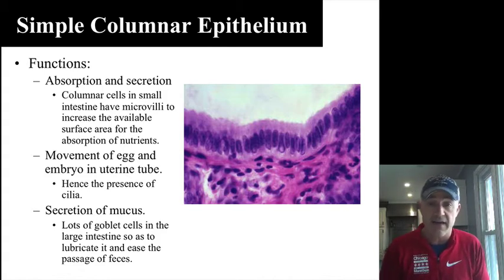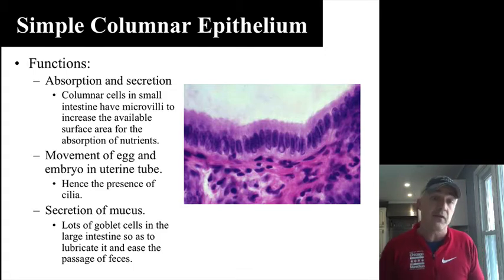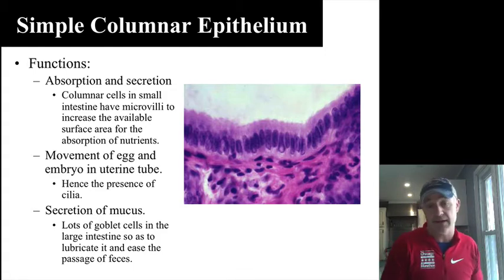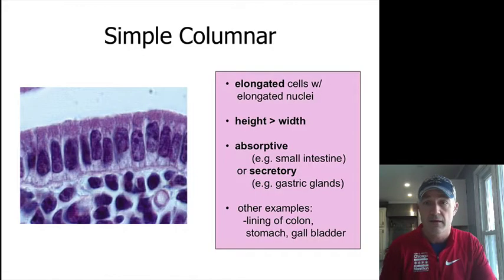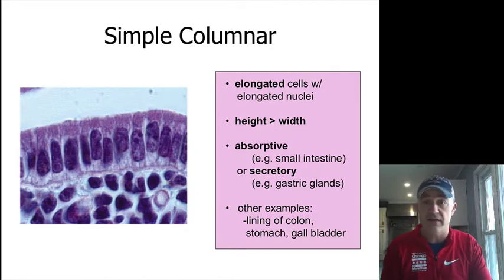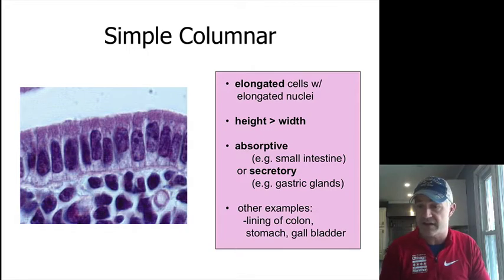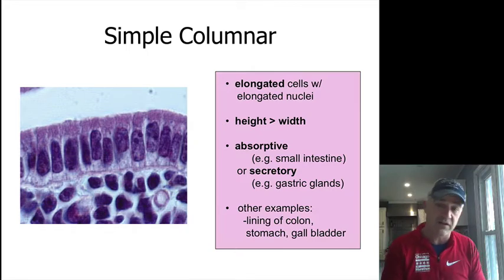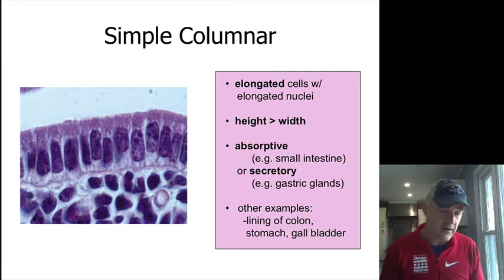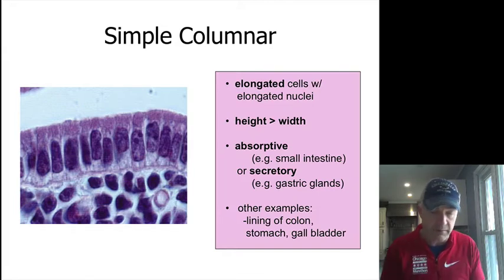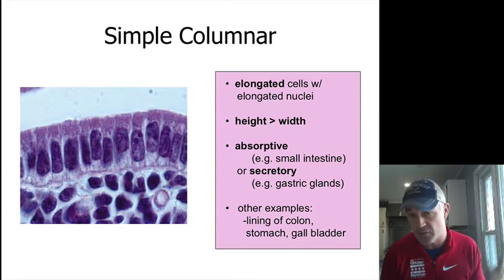The ciliated version of simple columnar is found in the uterine (fallopian) tubes. I try not to show that one as much to avoid confusion with pseudo-stratified. Sometimes simple columnar can look multilayered depending on the angle of the slice. The summary: elongated cells, elongated nuclei, height greater than width, doing a lot of absorption in certain areas and secretion in others. Found in the colon, stomach, large and small intestine, gallbladder, and fallopian tubes with cilia.